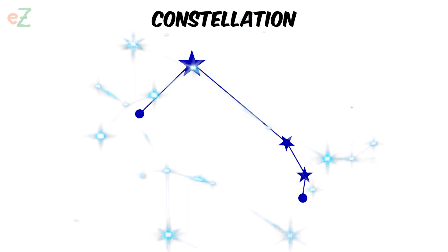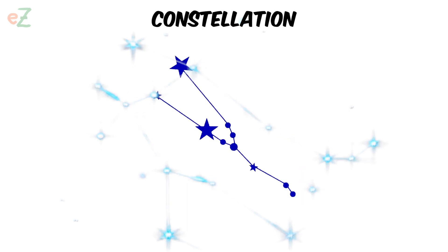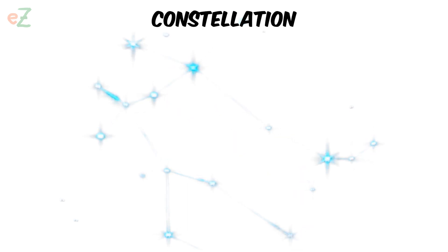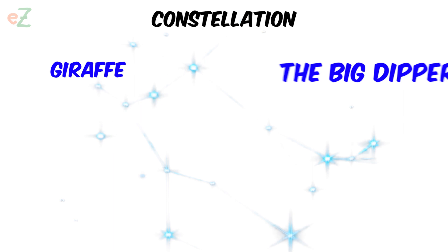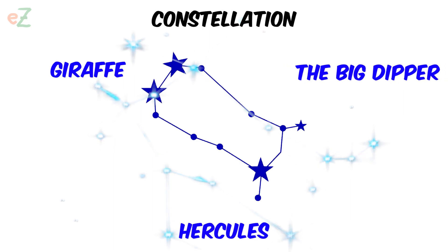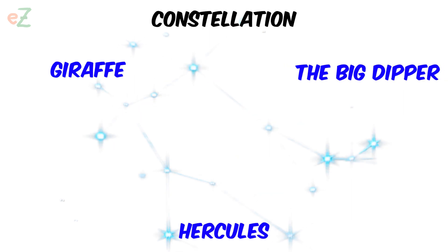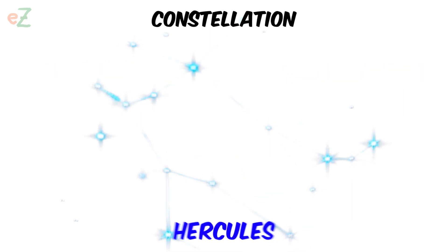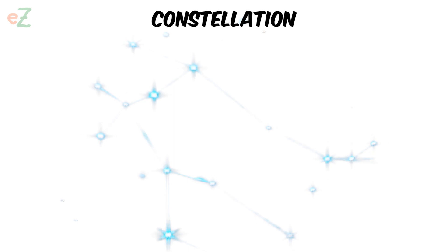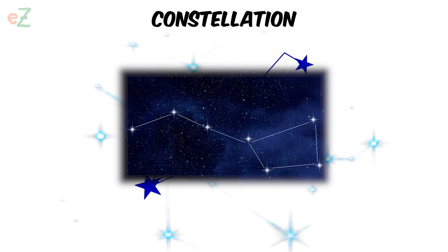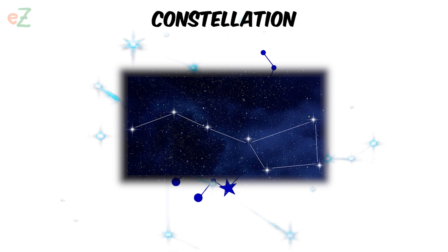Constellation. A group of stars in the sky. They are often named after an animal, object, or person. The stars form certain patterns based on where you are. We have one view of stars here on Earth, but from another solar system or galaxy, the constellations would look different.